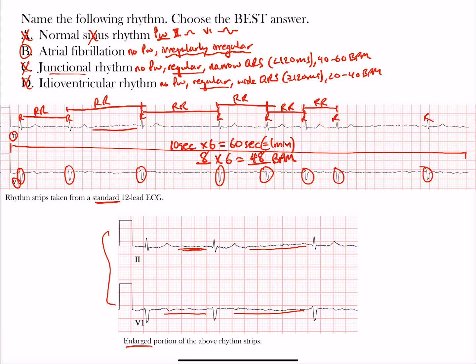A rate of 48 beats per minute with an irregularly irregular rhythm means this is atrial fibrillation with slow ventricular response, because the rate is less than 60. If the rate were over 100, we'd call it AFib with rapid ventricular response, or AFib with RVR. If between 60 and 100, it's just normal atrial fibrillation. The best answer here is choice B, atrial fibrillation.